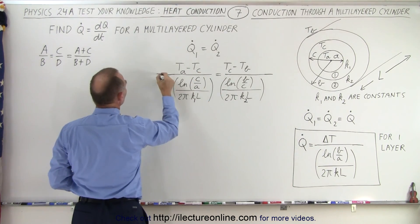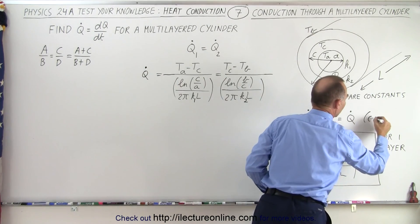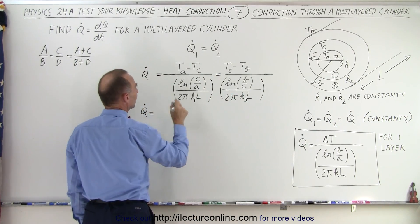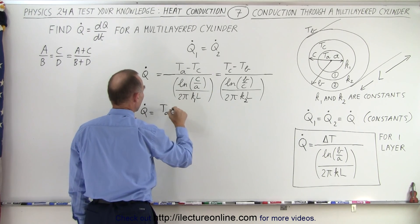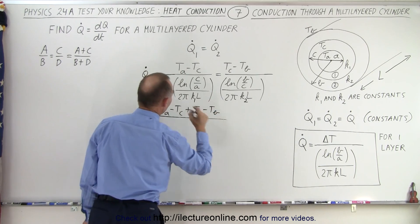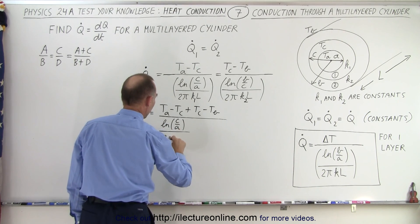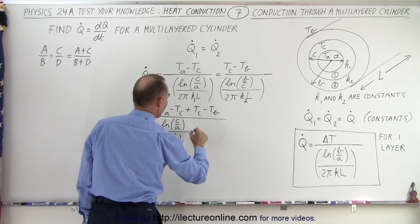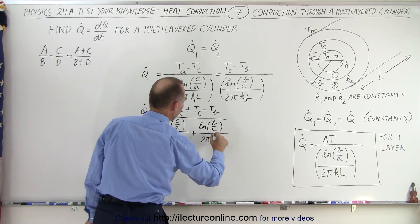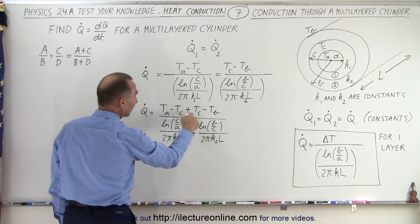We can add these two numerators together. If this is equal to Q dot — because these are all constants — we can come back and write that Q dot therefore must equal the sum of the two numerators, which is TA minus TC plus TC minus TB, all divided by the sum of the two denominators: the natural log of C over A divided by 2 pi K1 L, plus the natural log of B over C divided by 2 pi K2 L. And then you realize, when you look at the numerator, that the TCs cancel out.